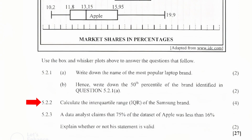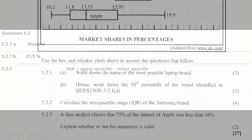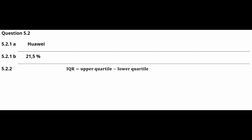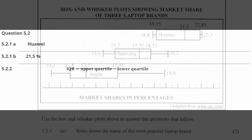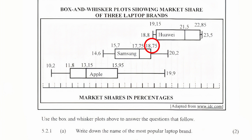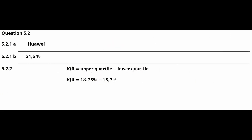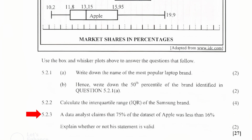Question 5.2.2: Calculate the interquartile range of the Samsung brand. The interquartile range is the difference between the upper quartile and the lower quartile, using the equation: IQR = upper quartile − lower quartile. From the box and whisker plot for Samsung, the upper quartile is 18.75% and the lower quartile is 15.7%, so the IQR equals 18.75 − 15.7 = 3.05%.